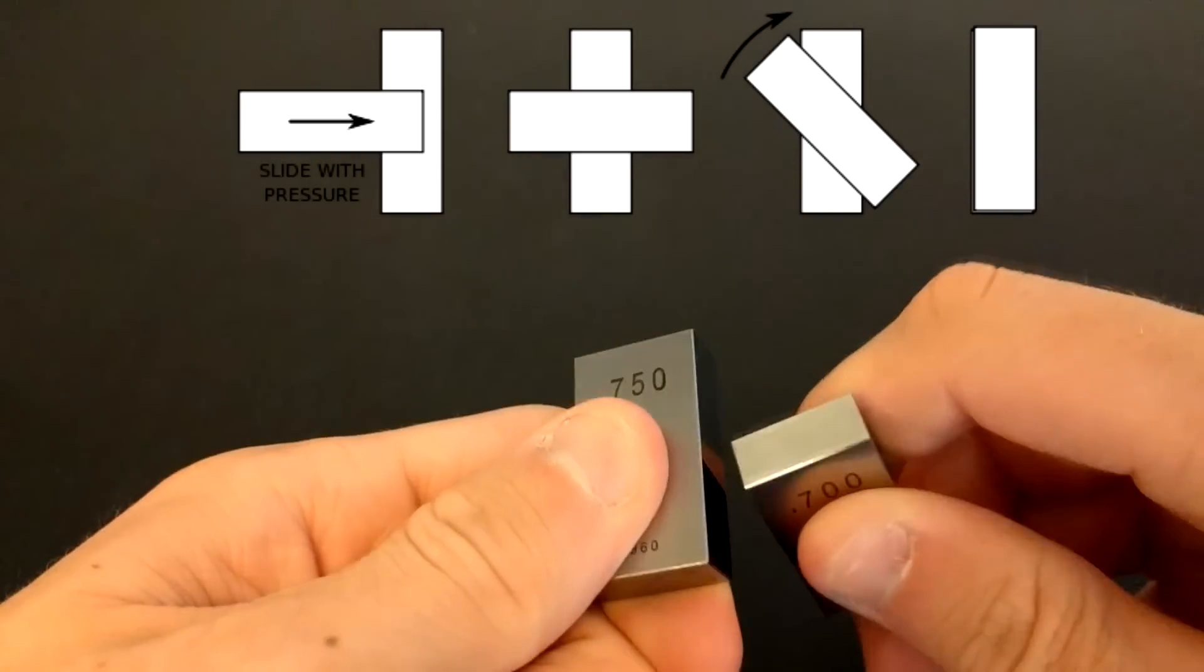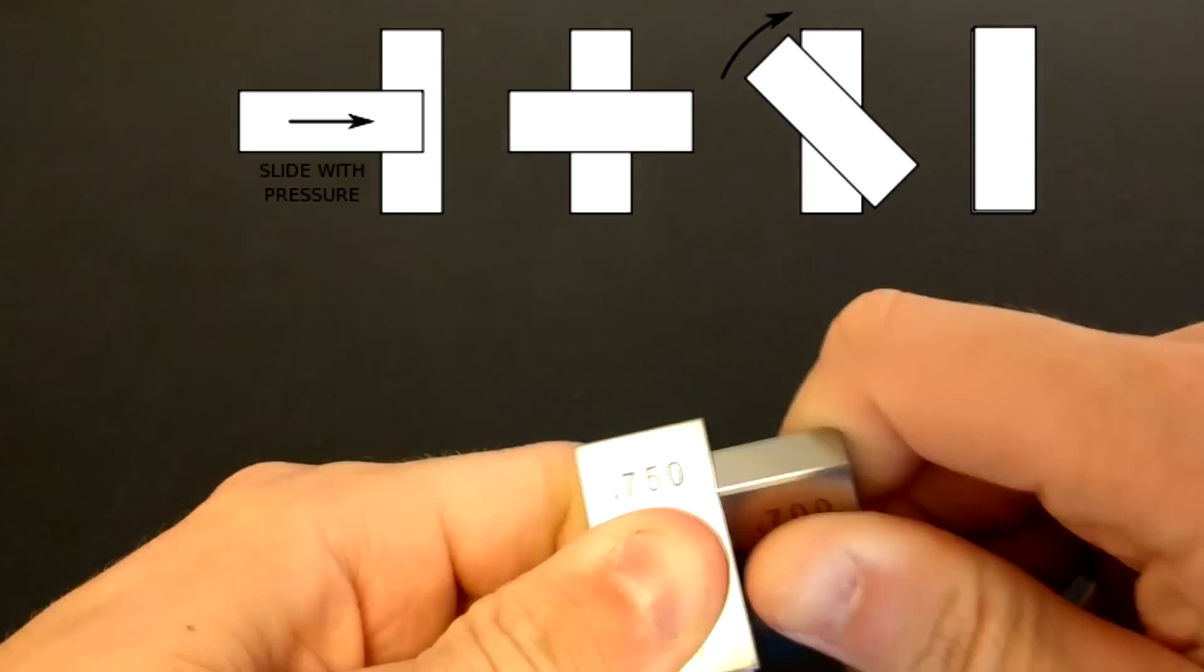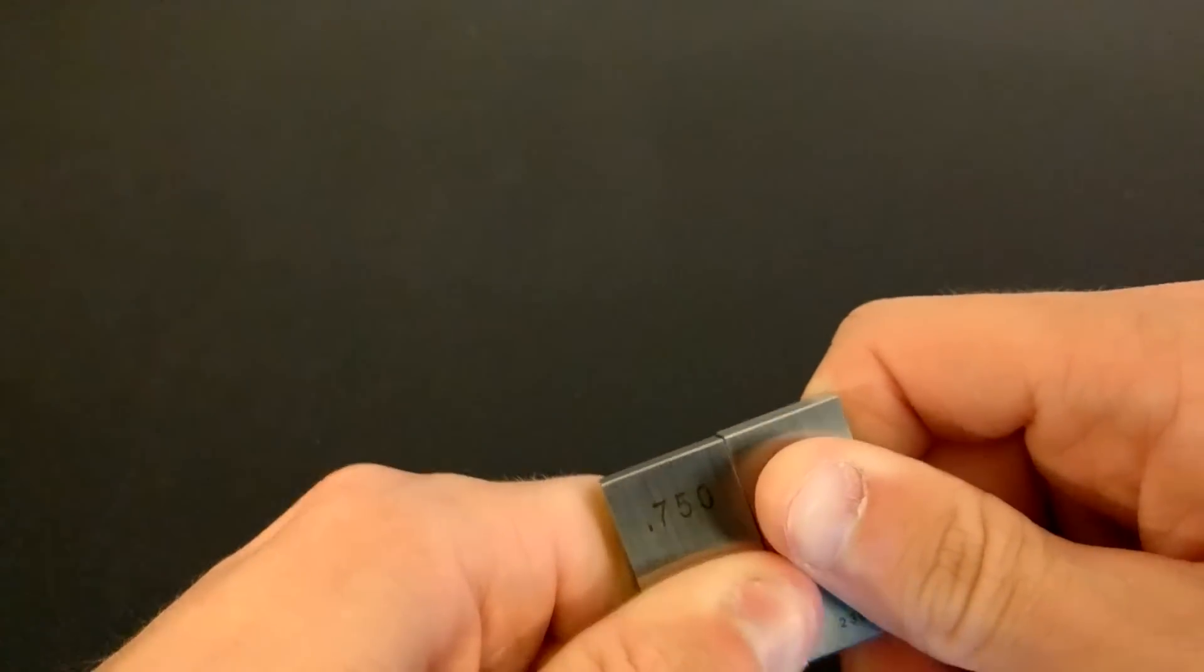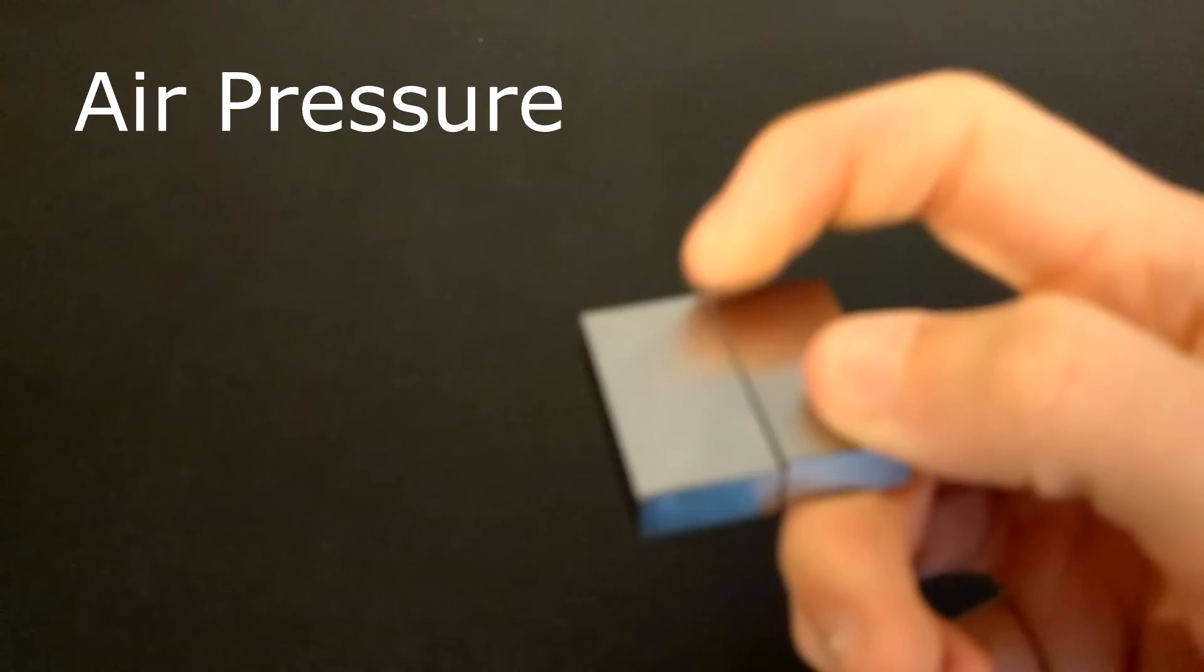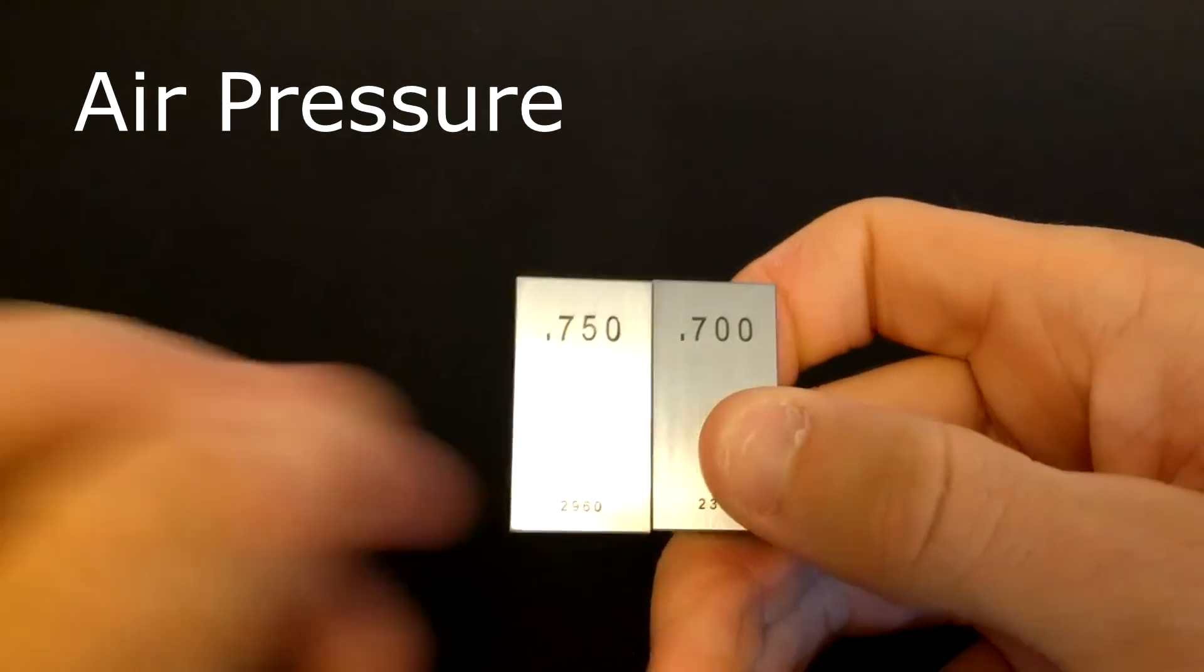There are several potential explanations that most likely work together to create the effect. First of all, because there is nearly no air between the smooth surfaces when pushed tightly together, the air pressure might push in on both blocks.